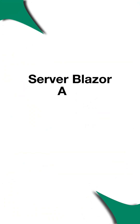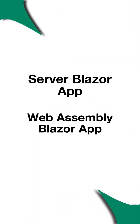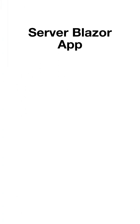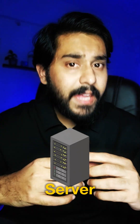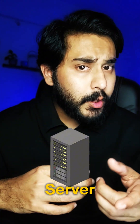There are two types: Server Blazor App and WebAssembly Blazor App. In Server Blazor App, your app runs on the server, but the user interacts with it through real-time communication using SignalR. So when you click on a button or enter some data, it sends that action to the server where the logic happens, and then updates the UI.